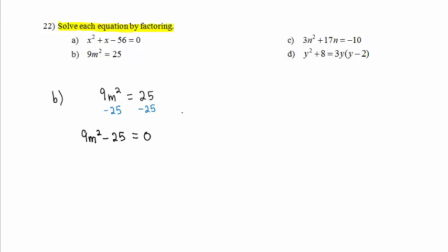The left-hand side is a difference of perfect squares. It factors as 3m plus 5 times 3m minus 5, and that is equal to 0.